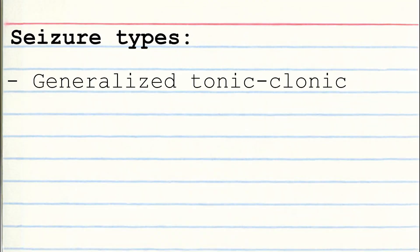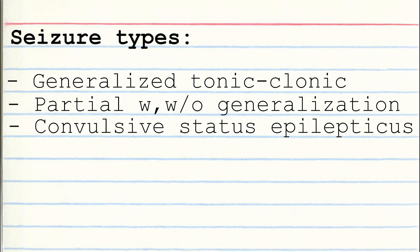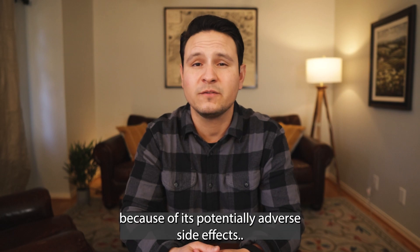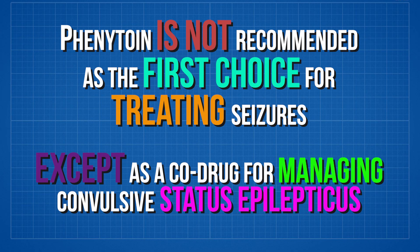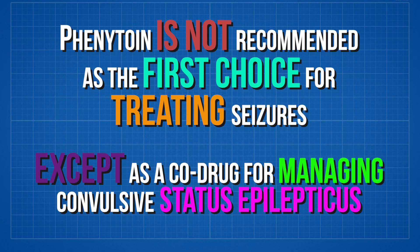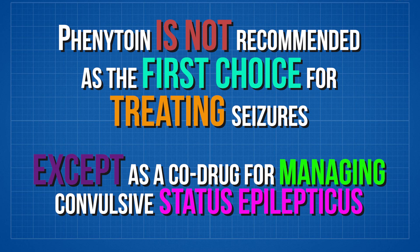Phenytoin is effective for treating generalized tonic-clonic seizures, partial seizures with or without generalization, and convulsive status epilepticus. It's important to note that because of its potentially adverse side effects, phenytoin is not recommended as a first choice for treating epileptic seizures, except as a co-drug for managing convulsive status epilepticus.